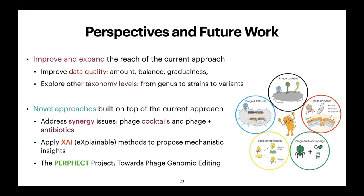One line we would like to explore is the use of explainable AI methods to extract mechanistic insights from the models we have built — specifically, identifying which parts of the phage genomes are responsible for highest efficacy, or conversely for failing to infect a bacterium. Since we also work in explainable AI, this is a natural extension.